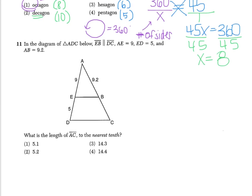Number 11 says, in the diagram of triangle ADC below, EB is parallel to DC. AE is nine, ED is five, and AB is 9.2. Our goal here is to figure out the length of AC to the nearest tenth.